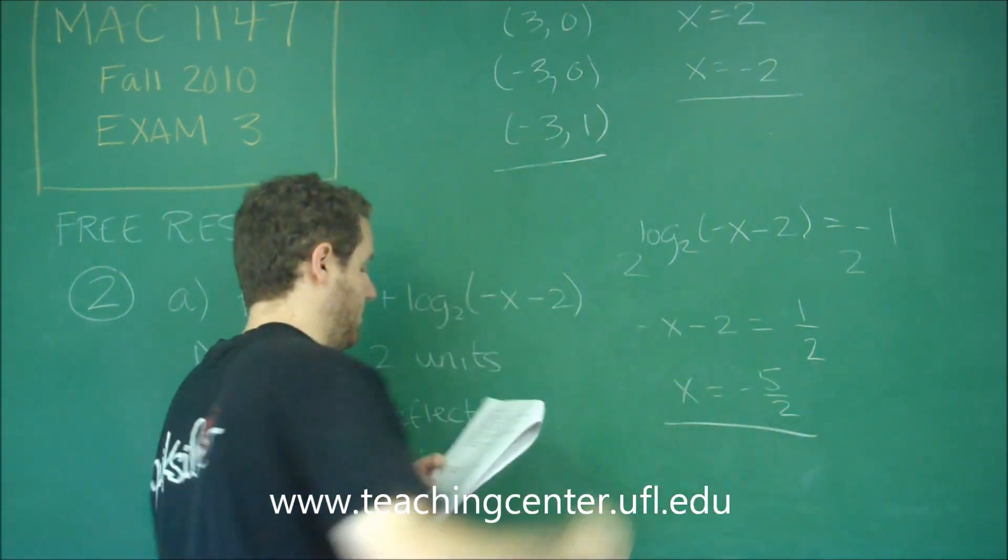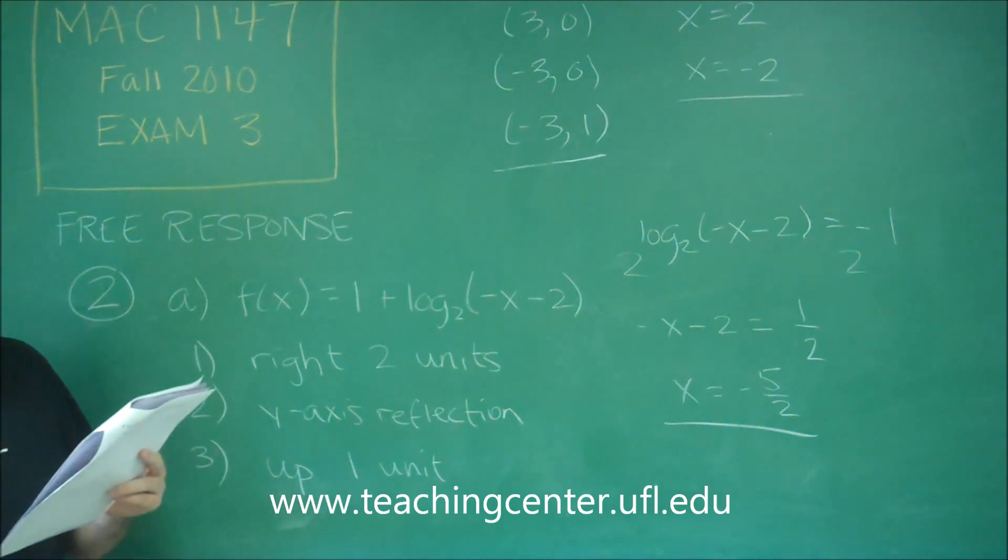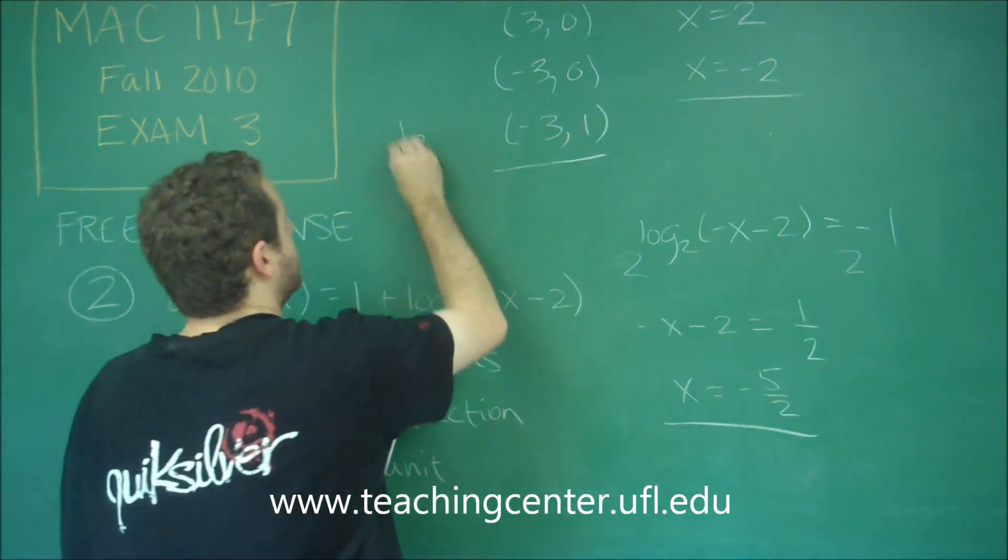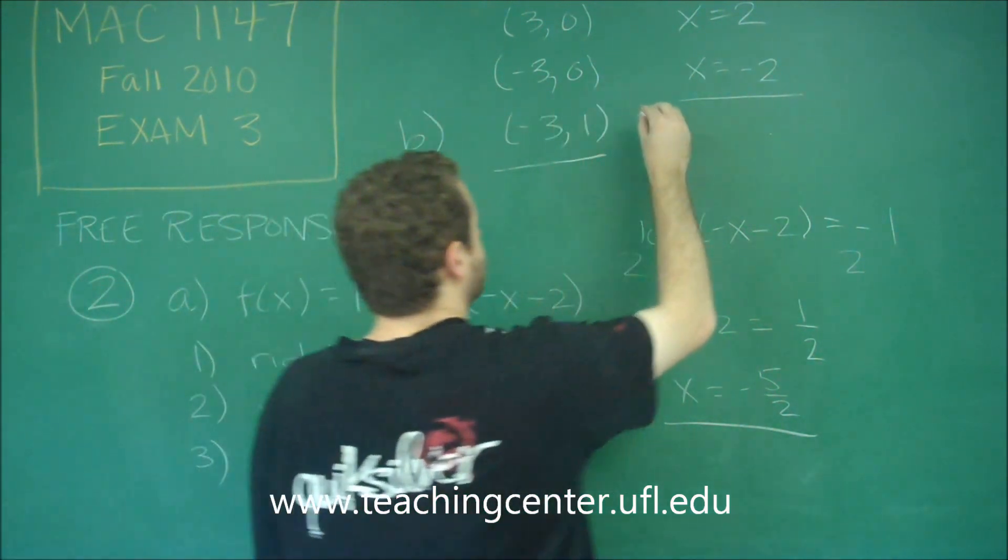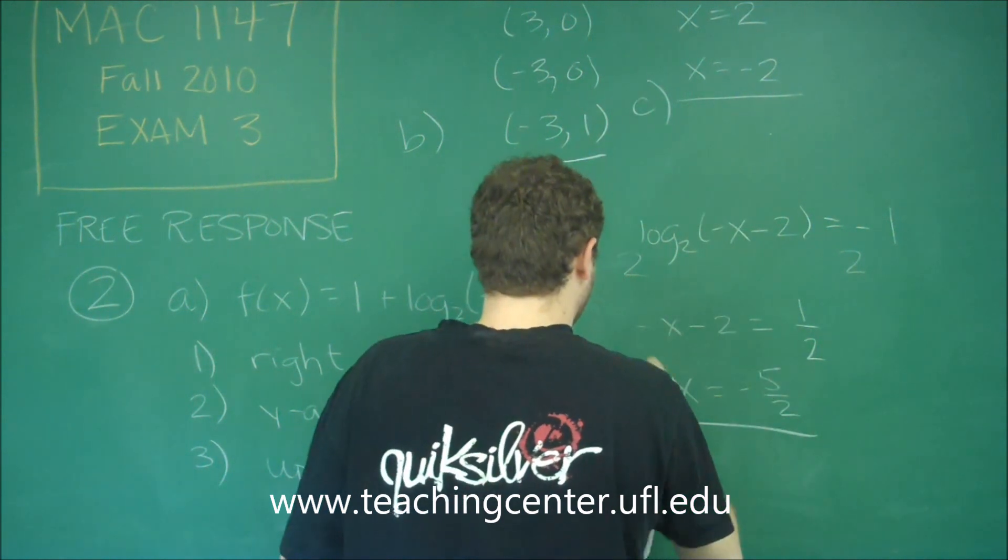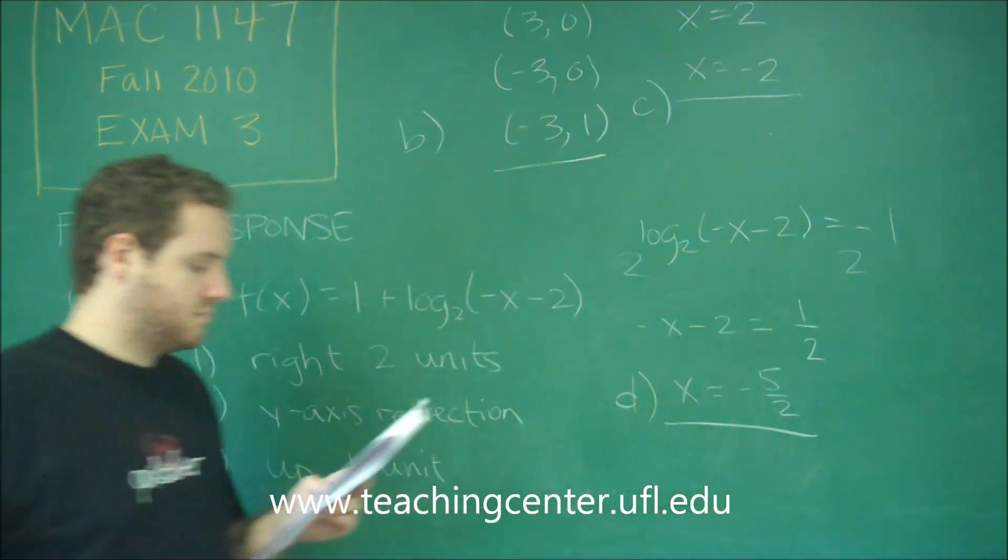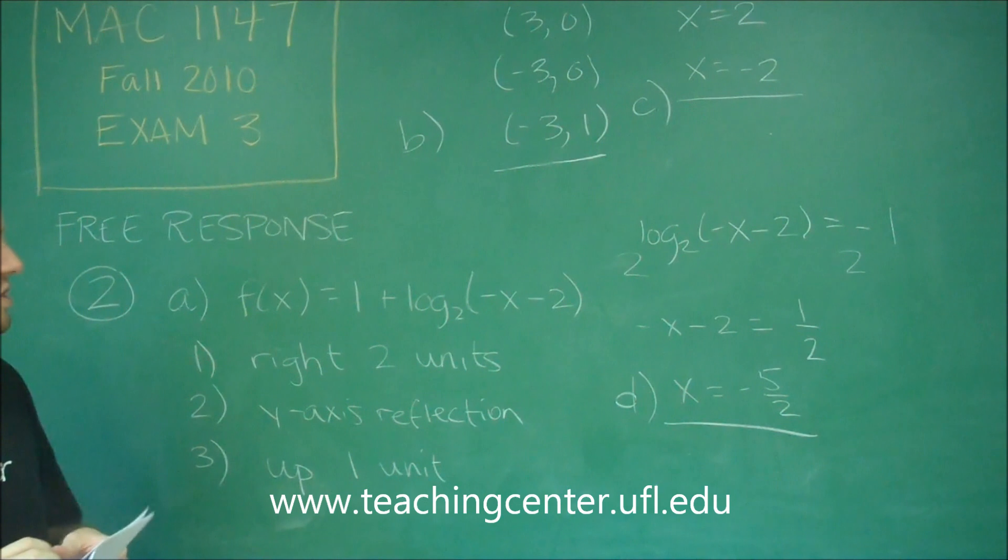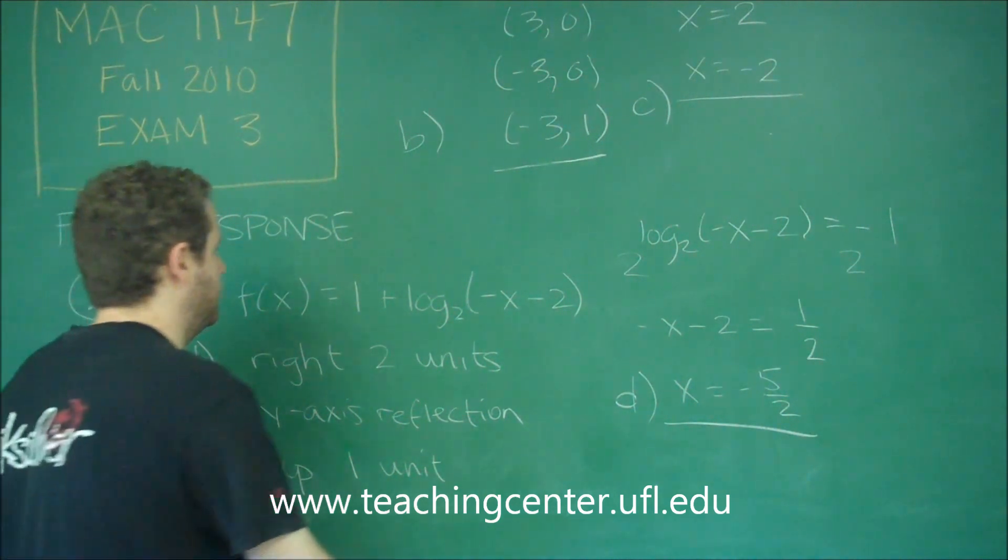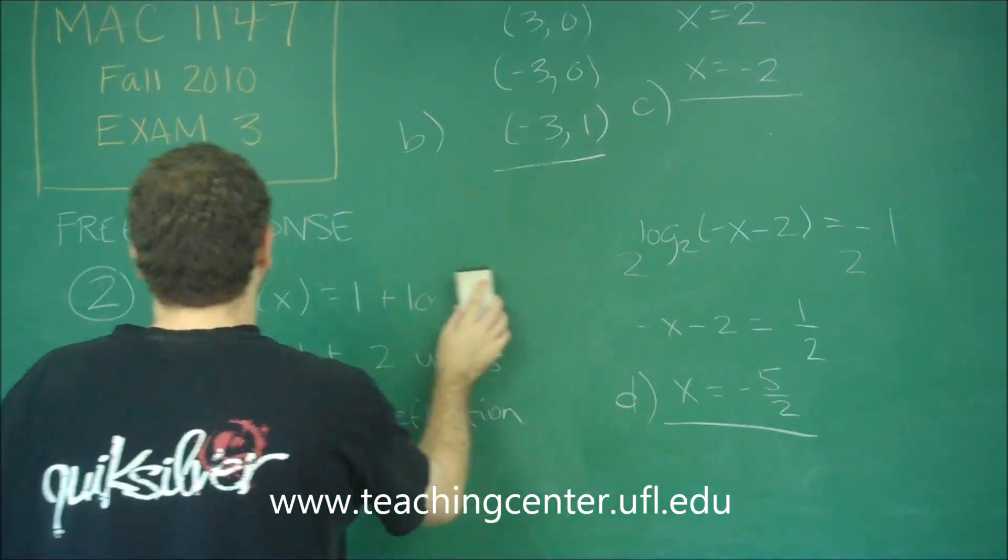So these three pieces of information here were b, c, and d. So let me write that up here real quick. That was b, c, d. So the last thing we need to do is just graph it given all this information. So we'll do that here.